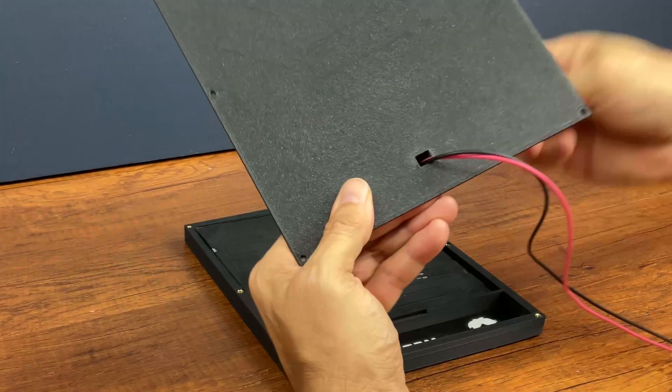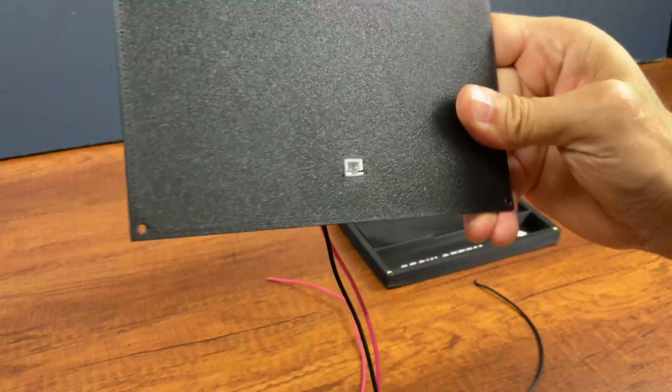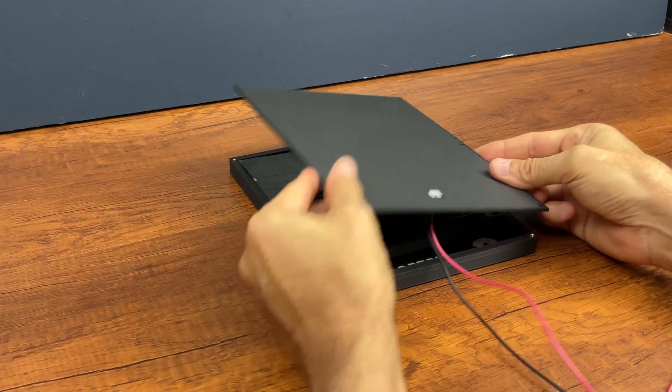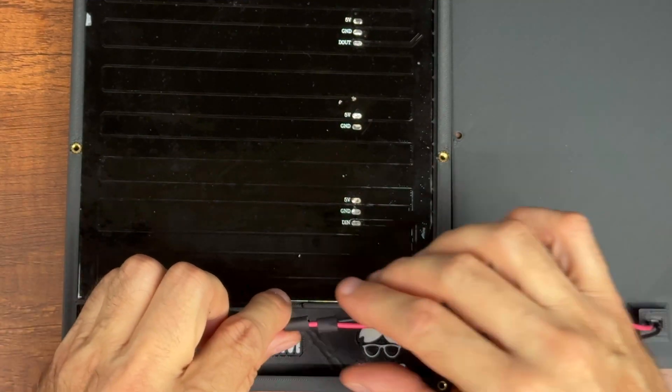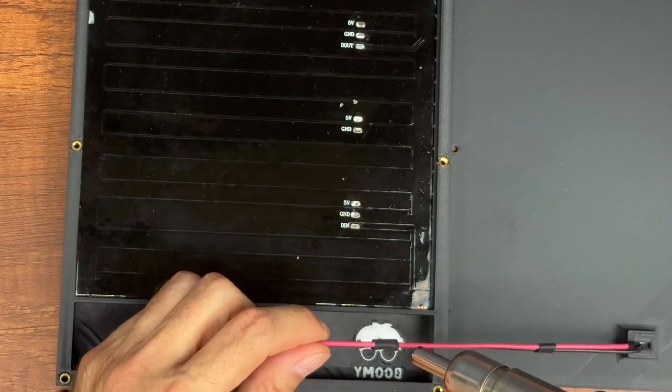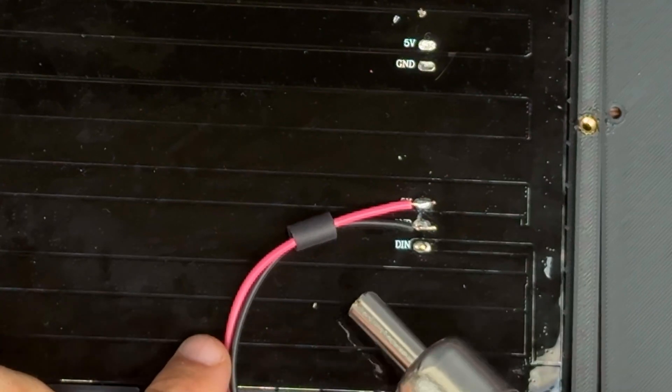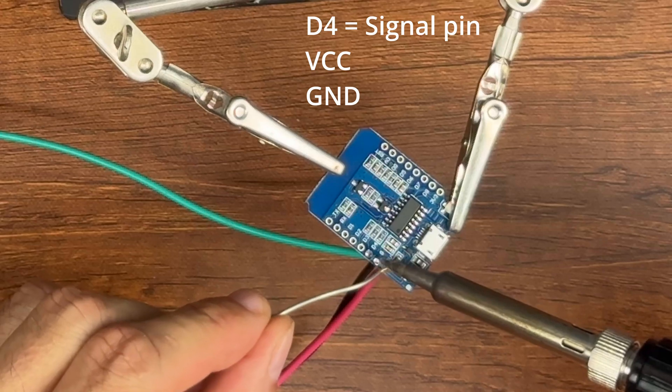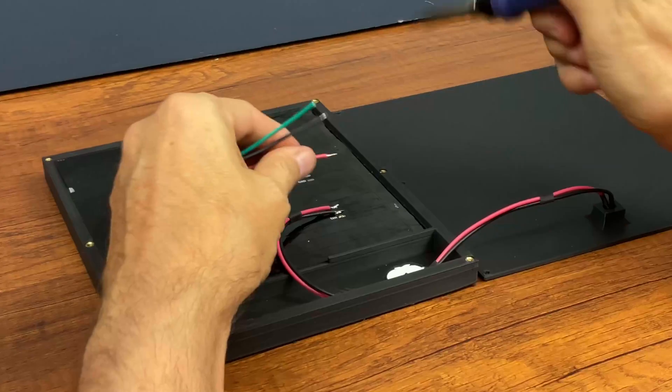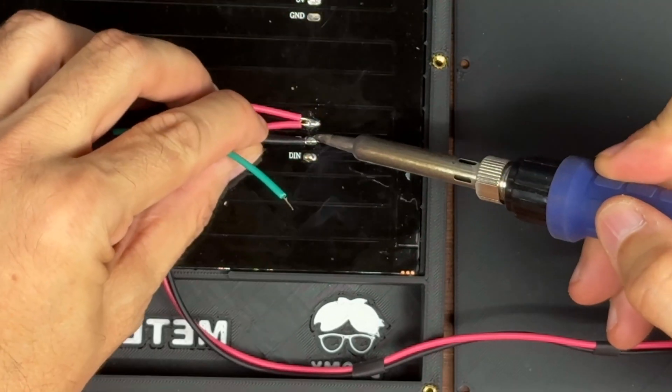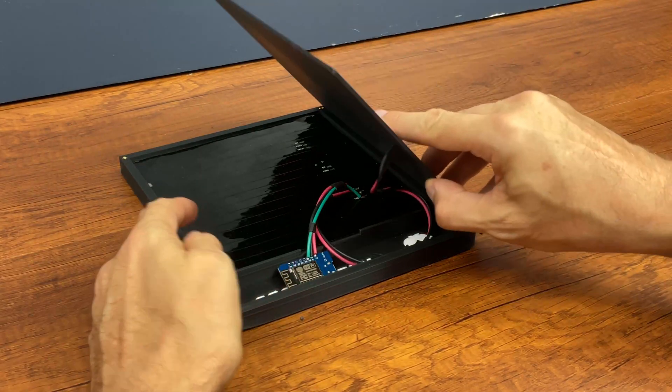Insert the GST connector and connect the ESP8266 to 5V and the input signal of the matrix. Close the box with M3 screws.